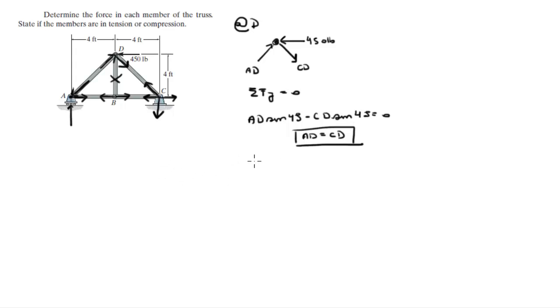Do you know that, so AD is equal to 450. This is the sum of the forces in the X is equal to 0. So AD is equal to 318.2 pounds and CD is equal to this also, 318.2 pounds. As you can see AD is in compression and CD is in tension.